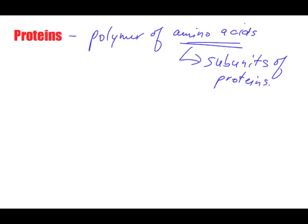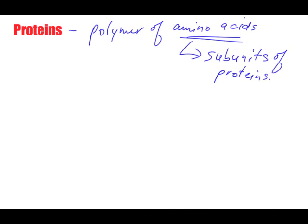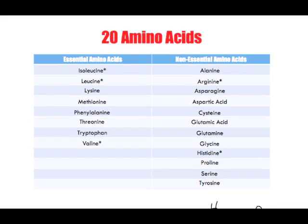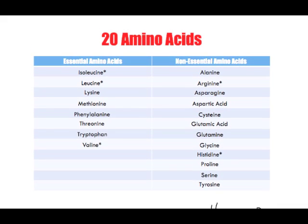There are 20 amino acids that are found in food. Of the 20, eight of them are considered essential. Let me just scroll down here. We have here on the left the essential amino acids, and the ones on the right are considered the non-essential amino acids.